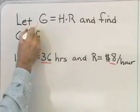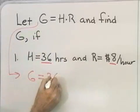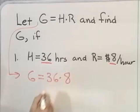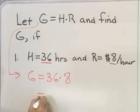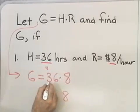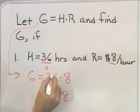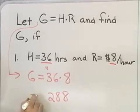So G will be equal to H, which is 36, times R, which is 8. And that comes out to be, let's see if I multiply, 8 times 6 is 48, carry the 4, 8 times 3 is 24, and 4 is 28, so 288. So this will be $288.